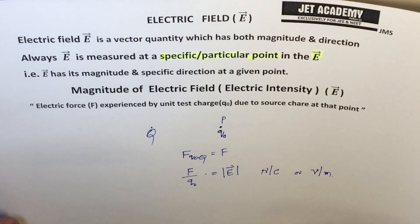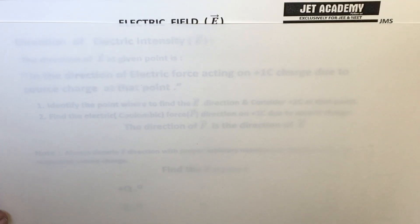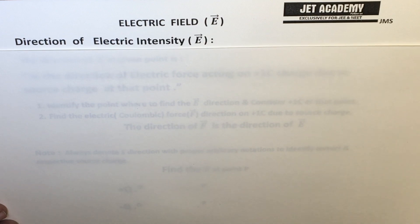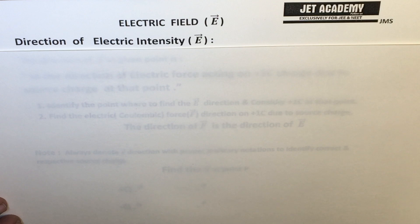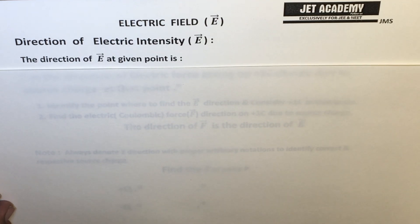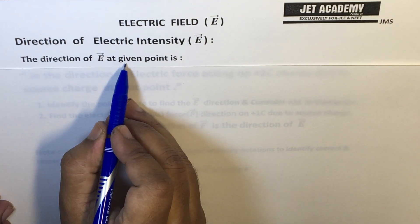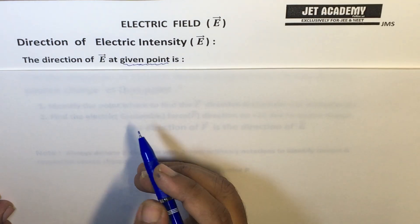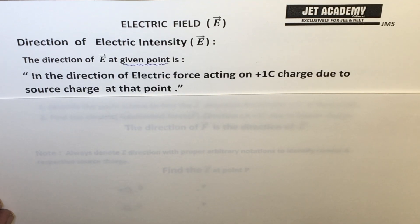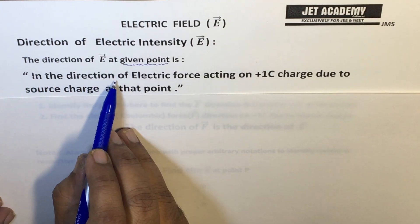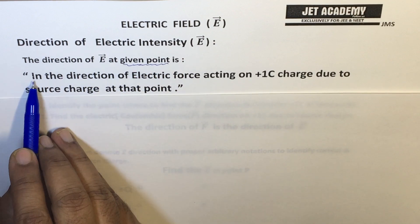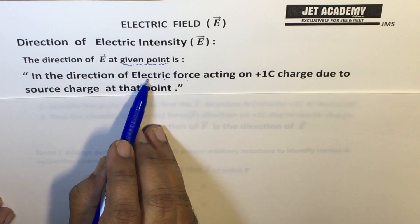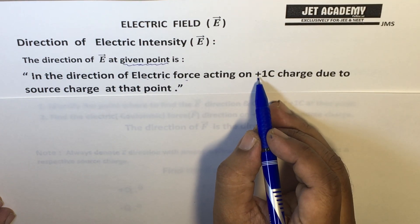Now we will discuss the direction of electric intensity. Identifying the direction of E at a given point is one of the most important things in this subject, because the whole subject depends on identifying the electric field direction. The direction of E at a given point is in the direction of the electric force, or Coulombic force, acting on plus one coulomb of charge due to the source charge at that point.